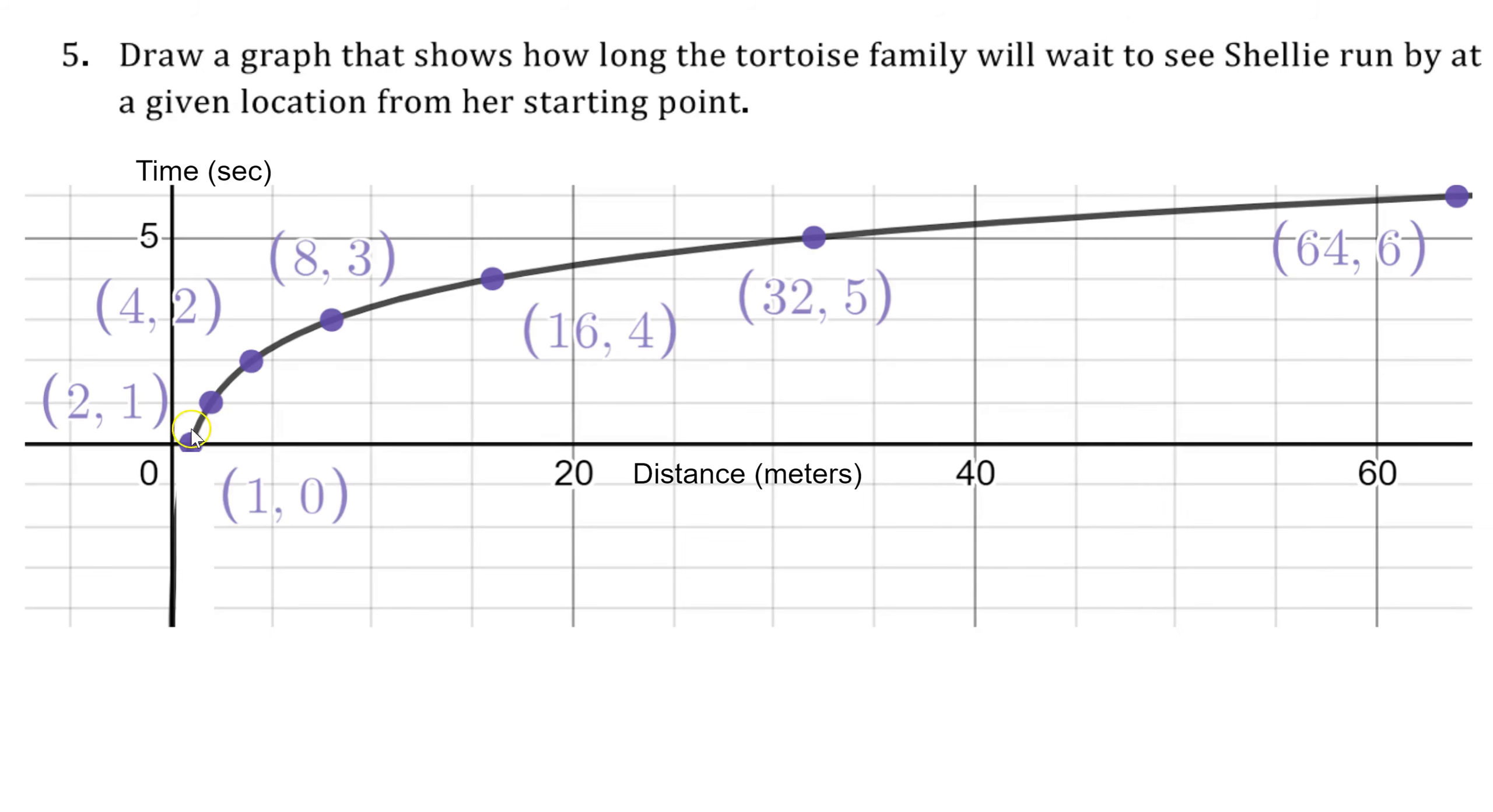If I take this inverted thinking idea and make a new graph where distance is the independent variable and time is the dependent, then I would get a graph that looks like this. You can see some of the same points. At 32 meters, it's 5 seconds. At 64 meters, it's 6 seconds. But the points have been inverted from what we were looking at previously.